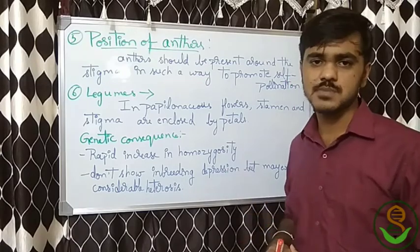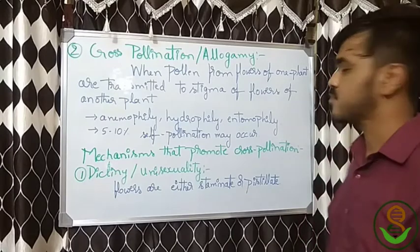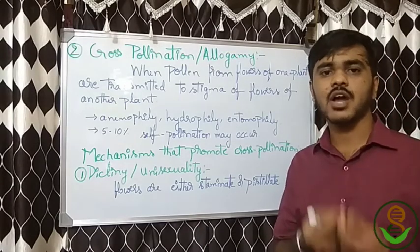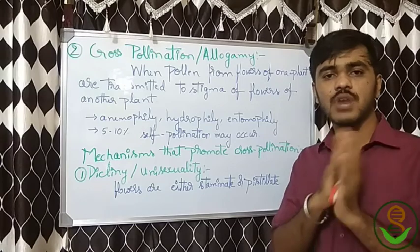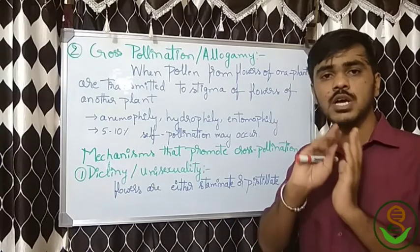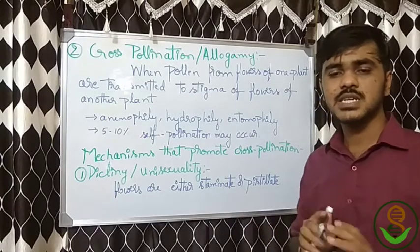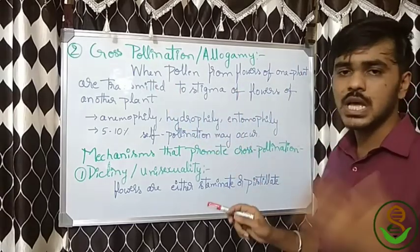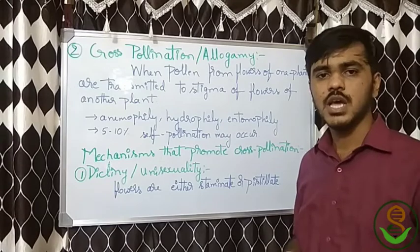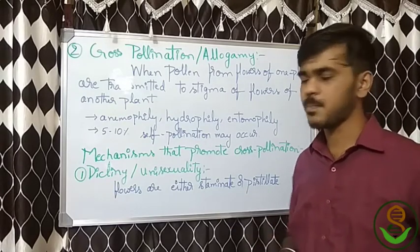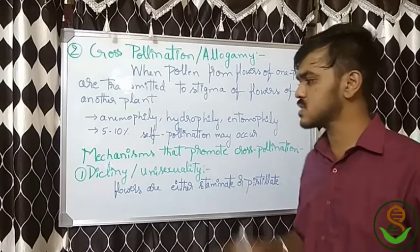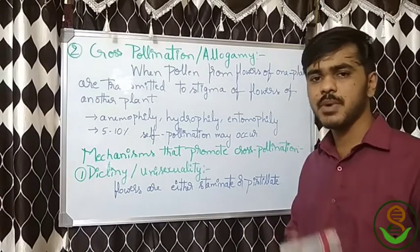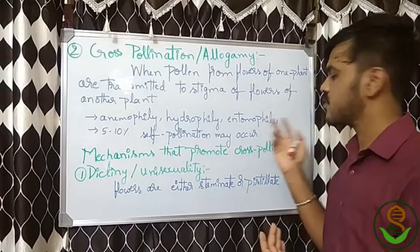Now let's see cross-pollination, also called allogamy. When pollen from a flower of one plant is transferred to the stigma of a flower of another plant, such a process is called cross-pollination. There are many carriers transferring pollen to the stigma of another plant: anemophily through wind, hydrophily through water, and entomophily through pollinating insects. In cross-pollinated species, five to ten percent of self-pollination may occur.